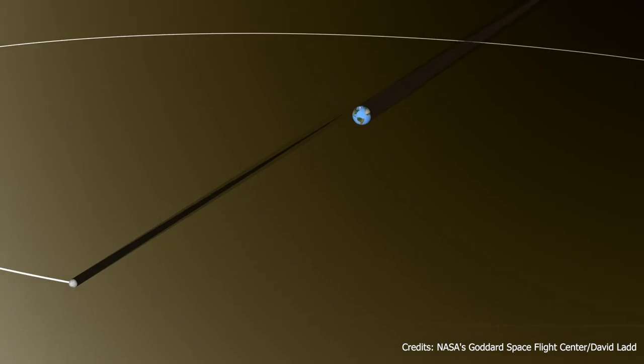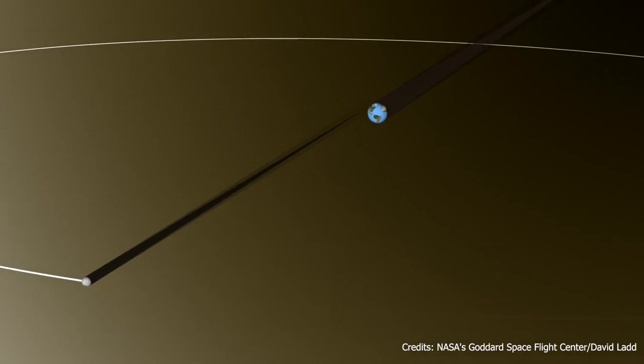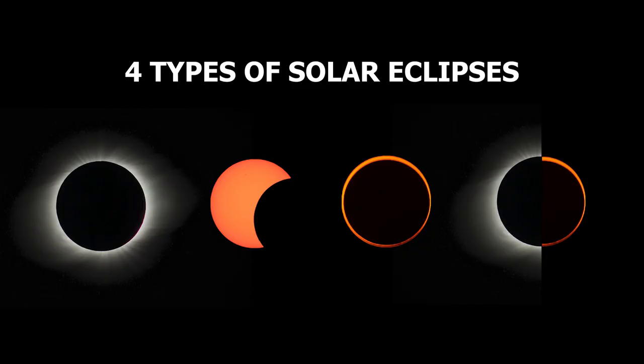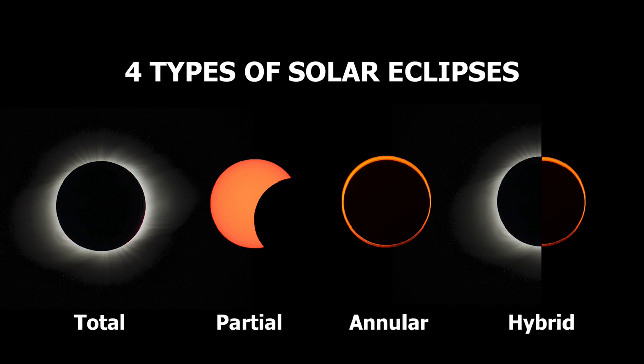There are four types of solar eclipses: total, partial, annular, and hybrid.